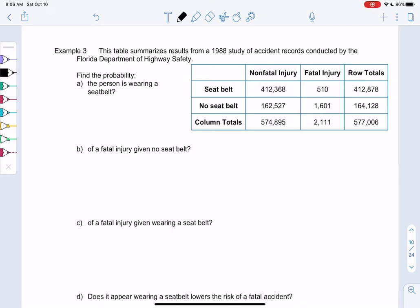Example 3 in section 5-3, we're going to look at a table that summarizes results from a 1988 study of accident records conducted by the Florida Department of Highway Safety, and we're going to look at a two-way table.